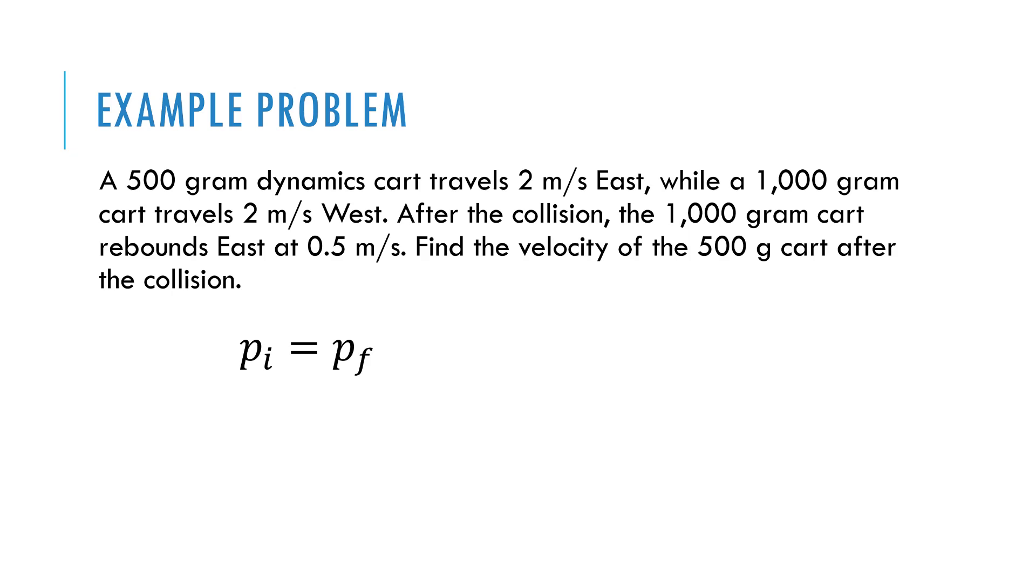So let's look at one. We can look at a problem where we have dynamics carts. This is similar to the demonstration that we did in class. We have one cart traveling east. Another cart travels west at the same speed but one is double the mass of the other. After the collision, the larger cart rebounds much slower to the east and we can find the velocity of the 500 gram cart after the collision. Since there's two objects, I need the initial momentum of each object and the final momentum of each object to set this up. So you'll see it's very similar to a conservation of energy problem. As I set the initial momentum of the whole system equal to the final momentum of the whole system. And then I have to think through what objects do I have in my system that have momentum in the initial condition, which will be before they collide. And then I think through what objects have momentum in my system after at the point of my final condition, which is after they collide.